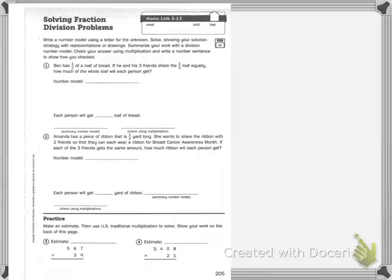Home link 513. The directions say write a number model using a letter for the unknown, show your solution strategy with representations or drawings, summarize your work with a division number model, and check your answer using multiplication to show how you checked.